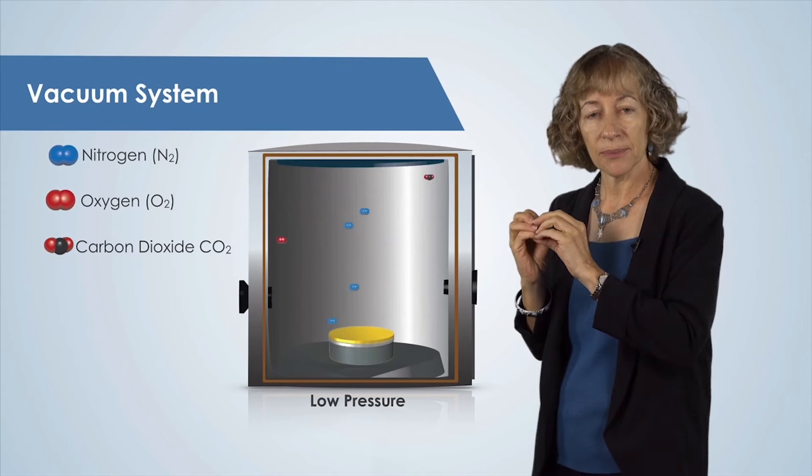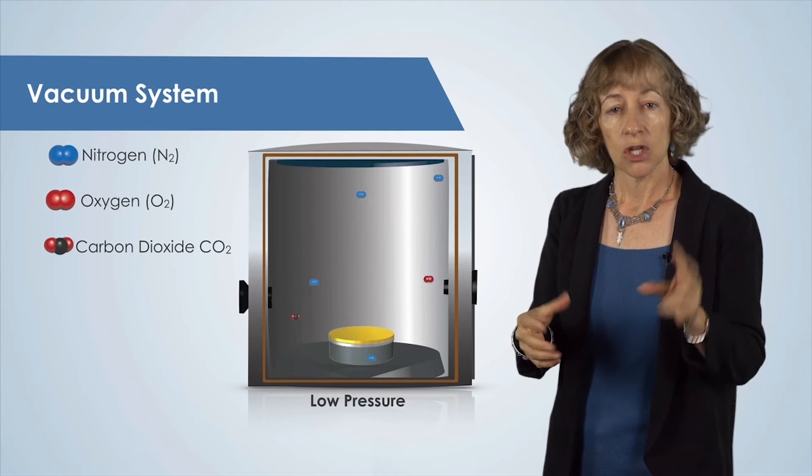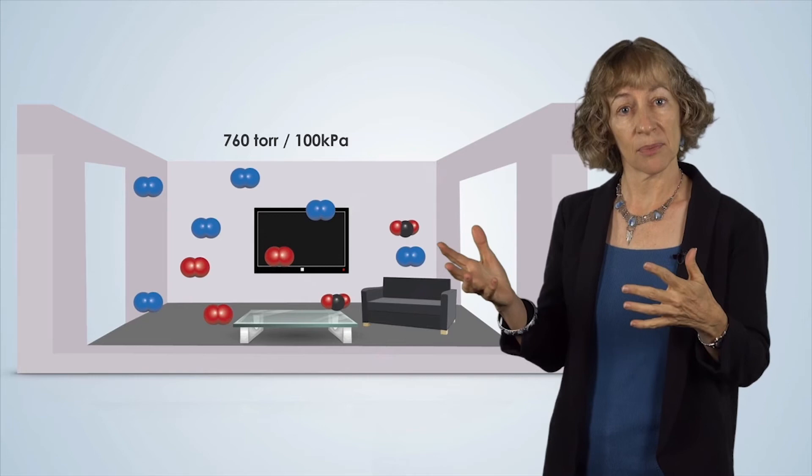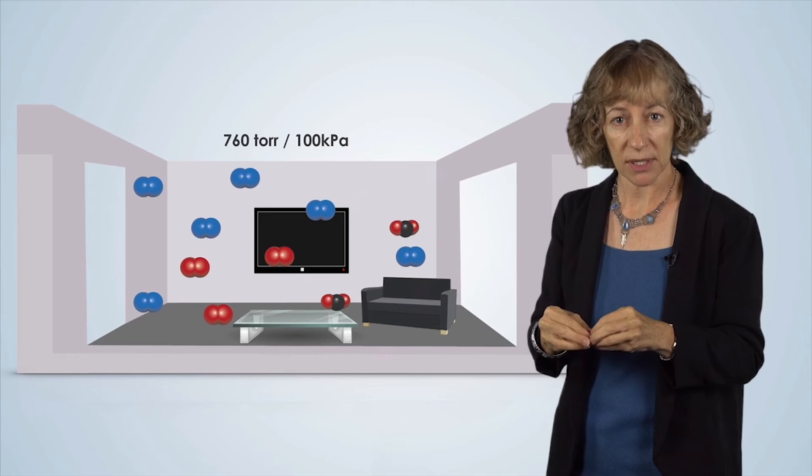Two common units of pressure used in laboratories are torr and pascal. A normal room has a pressure of 760 torr, or 100 kilopascal. As we remove the air from the chamber, the pressure will drop accordingly. For example, if we remove 99% of the air from a chamber, the pressure would be about 7.6 torr.